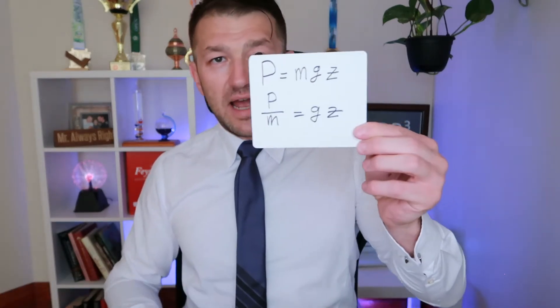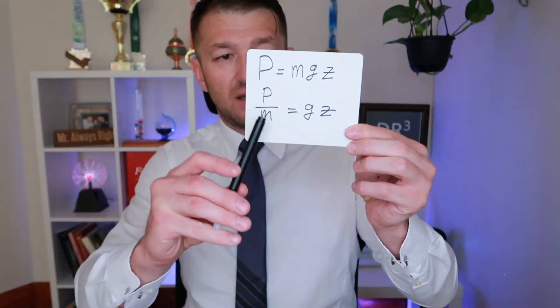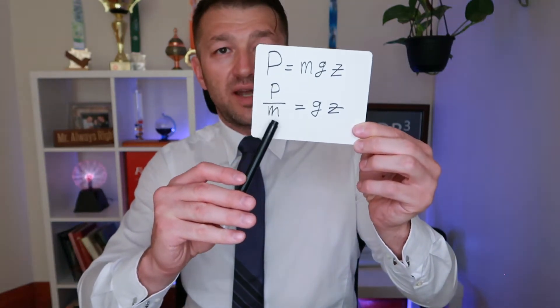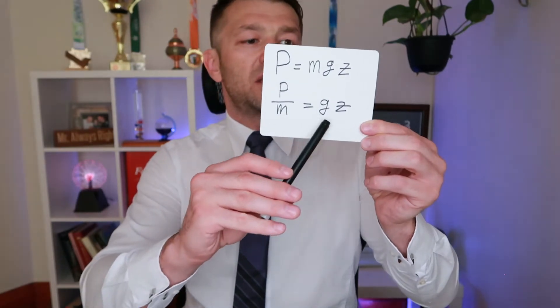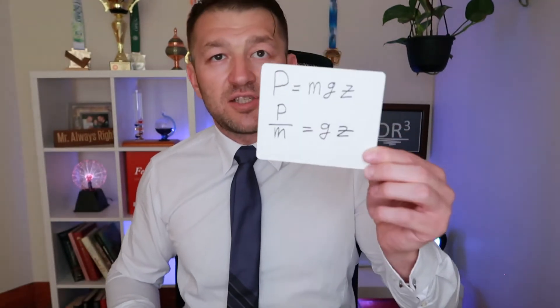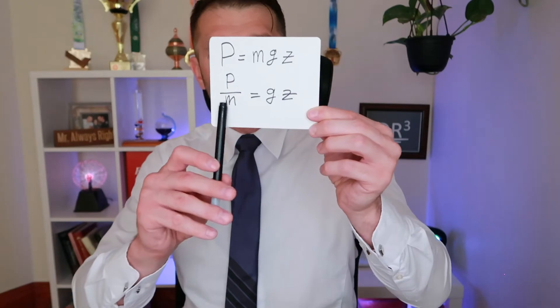And therefore, we rewrite potential energy like so. We say potential energy per mass is Gz. And this is geopotential. The bottom formula is geopotential. So, geopotential is also a work that needs to be done to lift a unit mass of air from some reference level, which is usually mean sea level, to some height z.